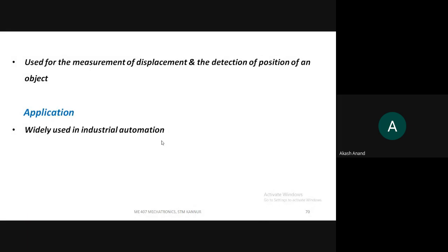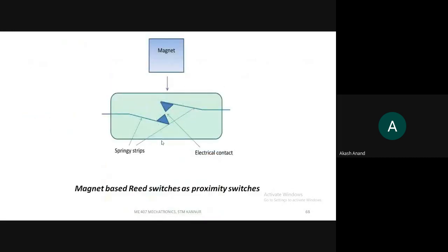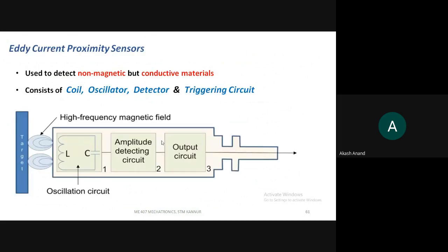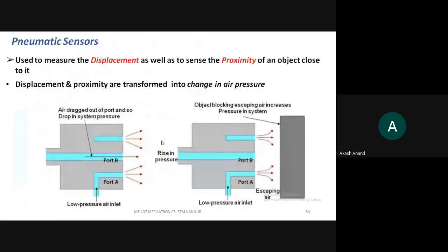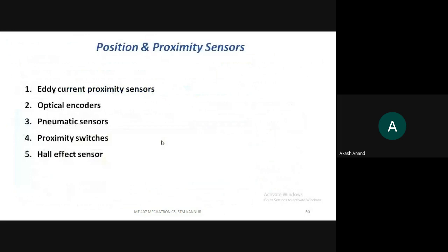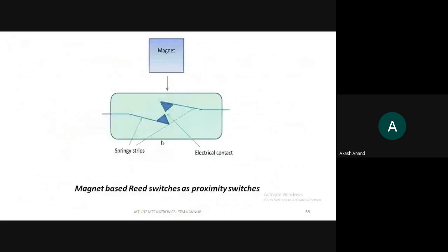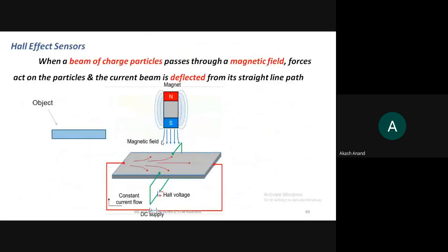Hall effect sensors are widely used in industrial automation. So up to here, position and proximity sensing is complete. To summarize: the first type was the eddy current proximity sensor, next is optical encoders, then pneumatic sensors, then proximity switches — both magnetic type and physical contact type — and finally hall effect sensors.